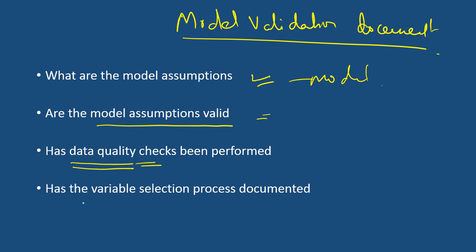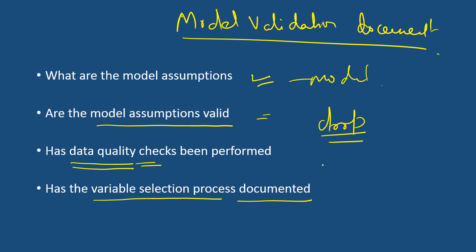The next checklist is whether the variable selection process has been documented. In model development you start with a number of variables and then narrow down to a few. That process should have been documented — why a particular variable is dropped and on what basis it is dropped. Clear explanation and proof should be in the model document, and as a model validator one should ensure all these points are taken care of.